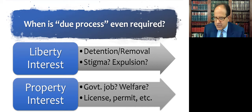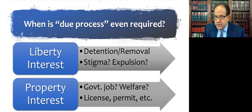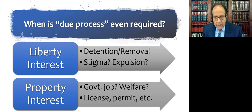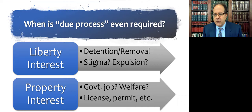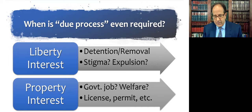Less obvious is government jobs and government benefits — commonly called welfare, but this includes Social Security retirement benefits, disability benefits, veterans benefits, food stamps, FEMA handouts after a natural disaster. If we're cutting you off once you've been receiving something, you might be entitled to a hearing. The same is true with government employment: we're not saying everyone has a right to a government job, but if you're already a government employee, you might be entitled to a hearing before we arbitrarily fire you. This is the rubric the Supreme Court has been using since the 1970s.